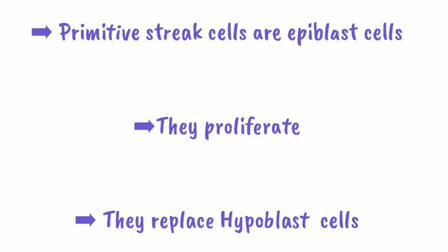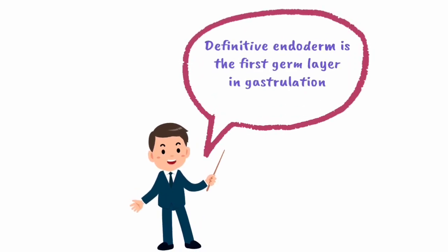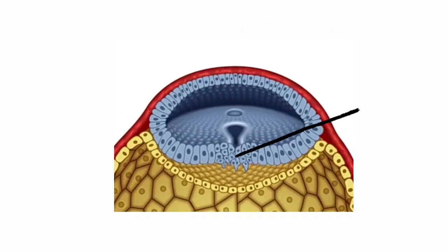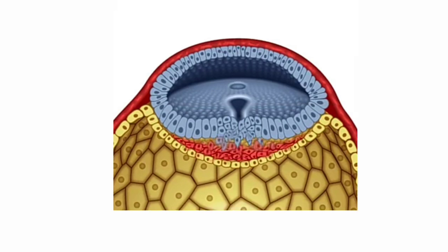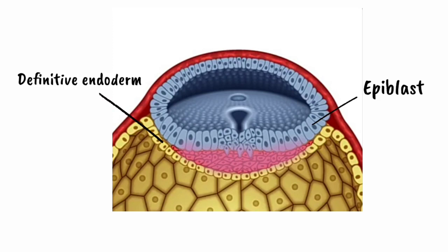These epiblast cells proliferate in order to replace the cells of the hypoblast, and thus form the definitive endoderm. Again, some of the primitive streak cells continue to proliferate and lay down a new layer in between the epiblast and the newly formed definitive endoderm.